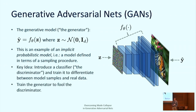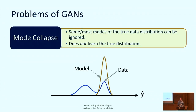The key idea of GANs is to introduce a classifier known as the discriminator, and to try to train it to differentiate between real data and fake samples. Our goal is then to train the generator to fool the discriminator. One of the key problems with GANs is mode collapse — the situation where, in a simple one-dimensional setting with a multi-modal data distribution, the model may only capture one of the modes and ignore the rest.